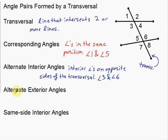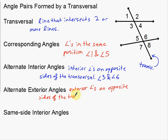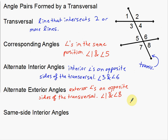Alternate exterior angles are angles on the outside that are on the opposite side of the transversal — exterior angles on opposite sides of the transversal. So we're looking at outside angles: seven and eight down there, and one and two up there. If we start with angle one and go to the opposite side, we have angle eight. Angle one and angle eight are one example of alternate exterior angles.